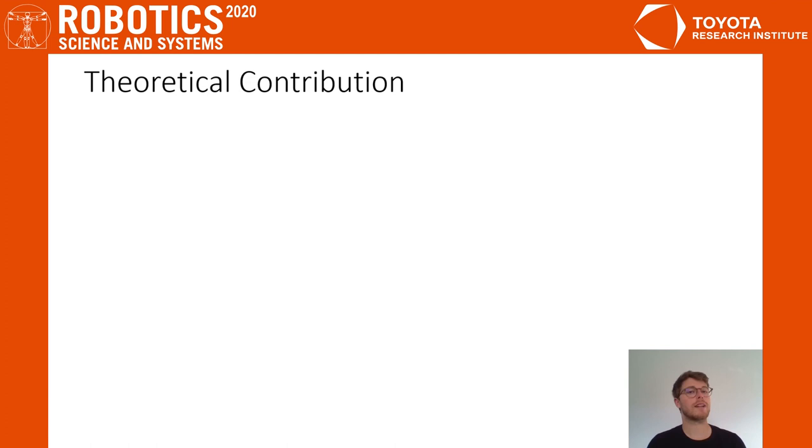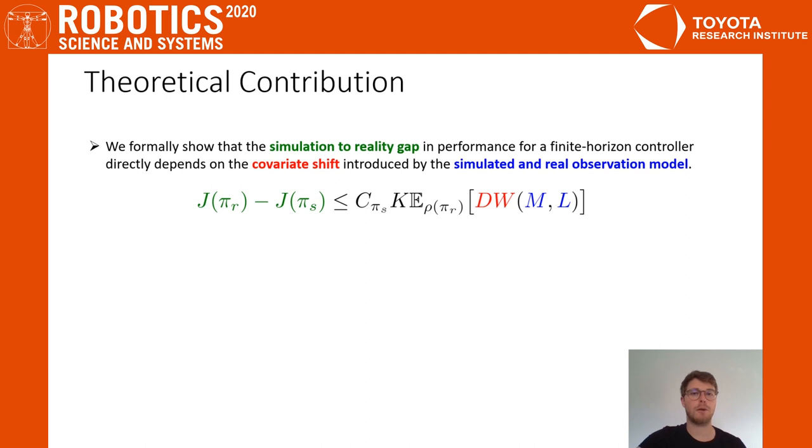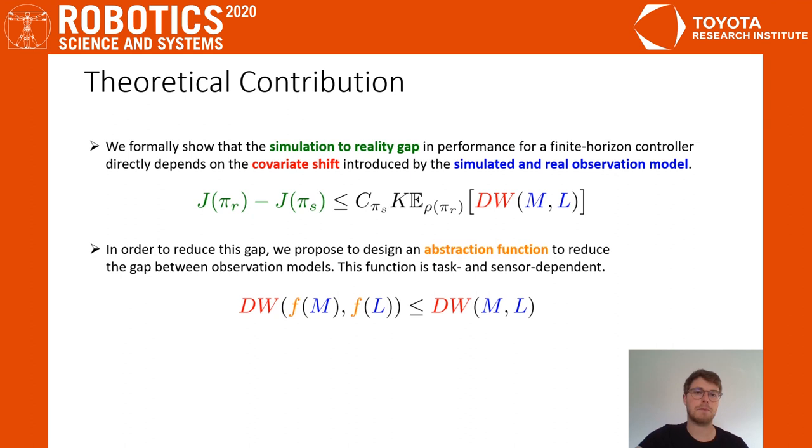Training a sensory motor policy purely in simulation and deploying it on a real platform requires bridging the sim-to-real gap. In this work, we formally show that the simulation to reality gap in performance is upper bounded by the covariate shift introduced by the simulated and the real observation model. The standard strategy to reduce this gap is to match the observation models, or in other words, make the simulation as realistic as possible. In this work, we make a different approach. Instead of trying to match the observation models, we transform them with an abstract function f such that their Wasserstein distance decreases.